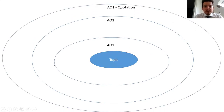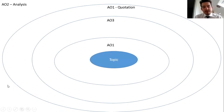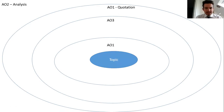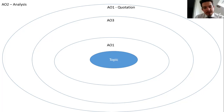Then you're going to have another circle around that — AO1 again — for your quotation. And finally on the outside you should have enough space to do some AO2 analysis. So that's what your basic sheet should look like, but what does it actually look like in practice?